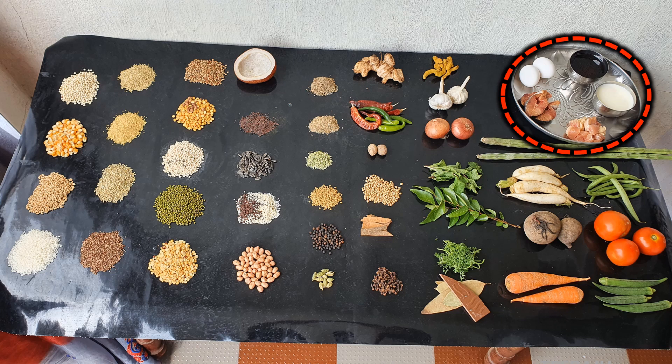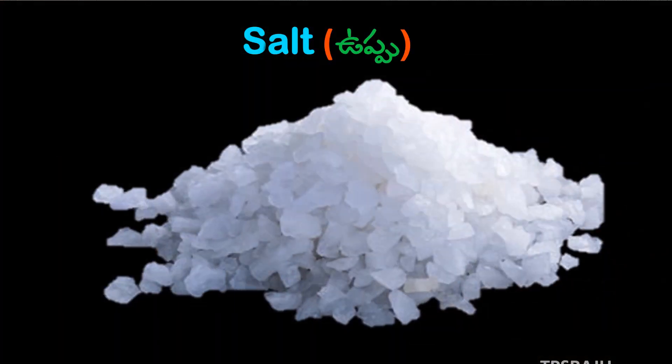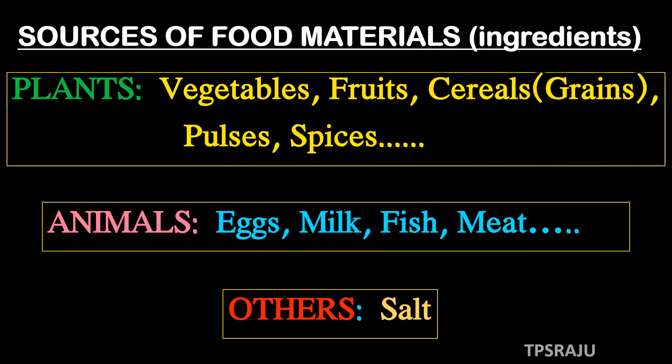Today we missed one of the most important ingredients — can you guess that? Salt! Yes, correct. Where do we get salt from — either plants or animals? No ma'am, I think we get salt from the sea. Very good. We get all the food materials from plants and animals except salt. So plants and animals are sources of food materials.